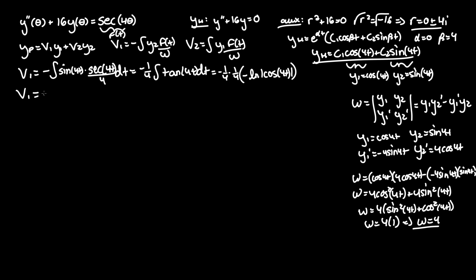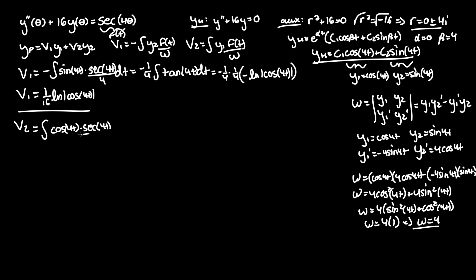For v2, that equals the integral of y1, cosine of 4t, times secant of 4t over 4 dt. Cosine and secant cancel, so that equals one-fourth integral of dt, which is simply one-fourth t. That one was a little easier.